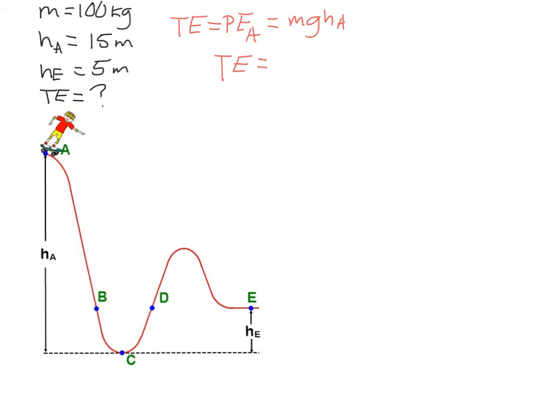So I'm going to set up my equation and solve for the total energy knowing that it's all gravitational potential energy at A. After doing the calculation, it comes out to 15,000 joules.